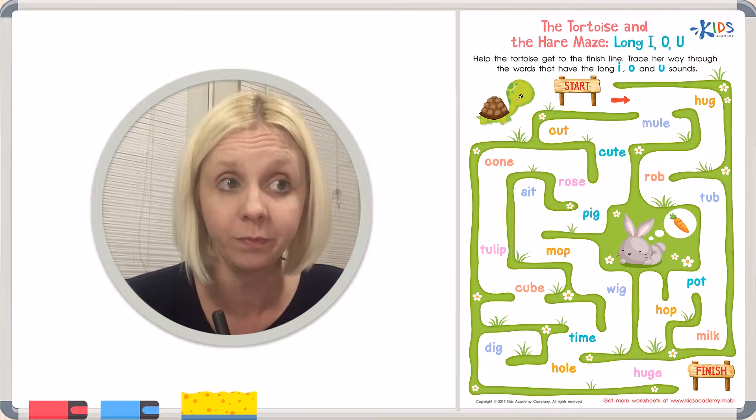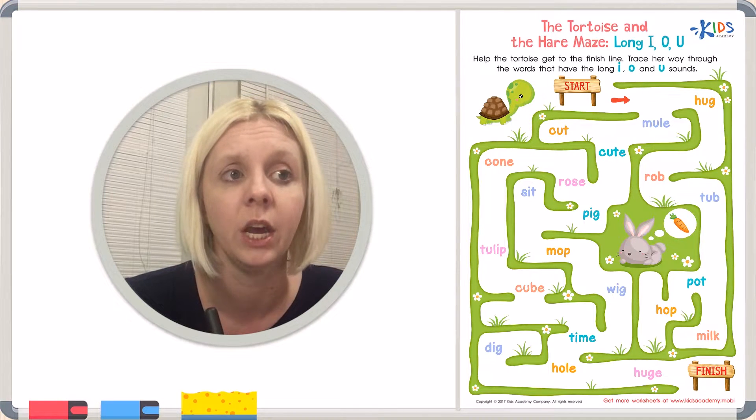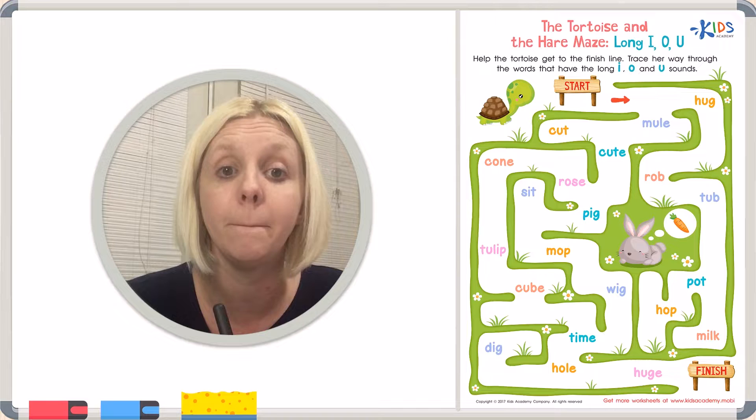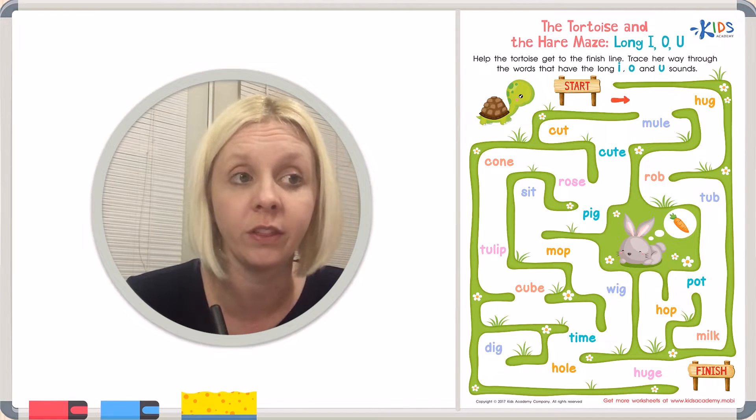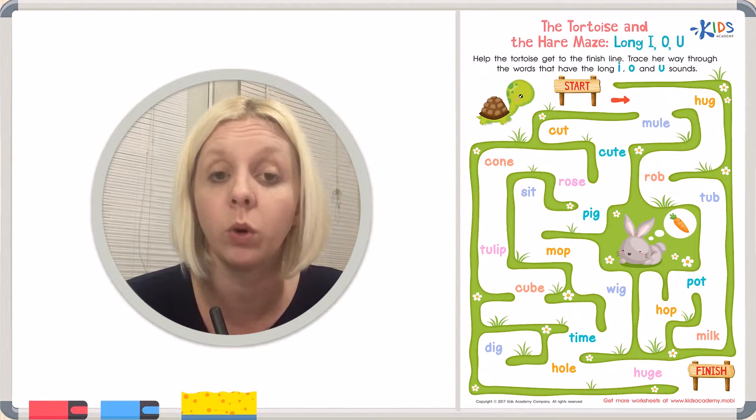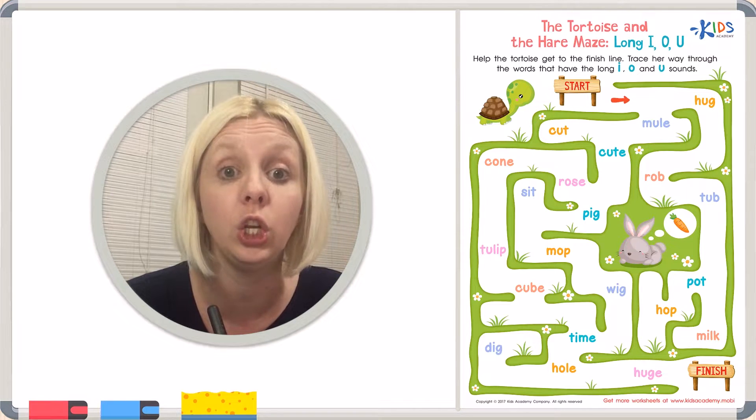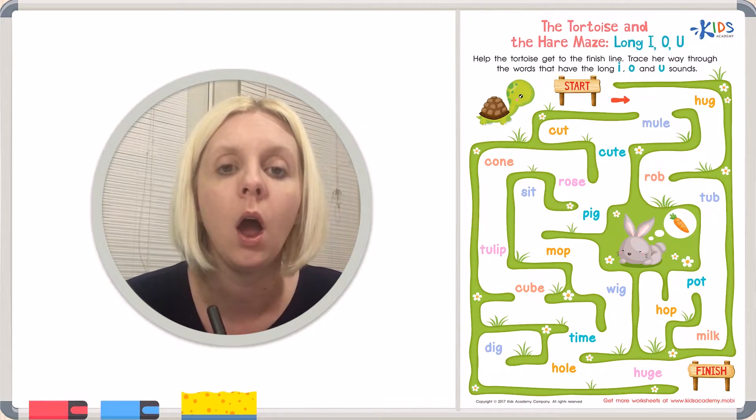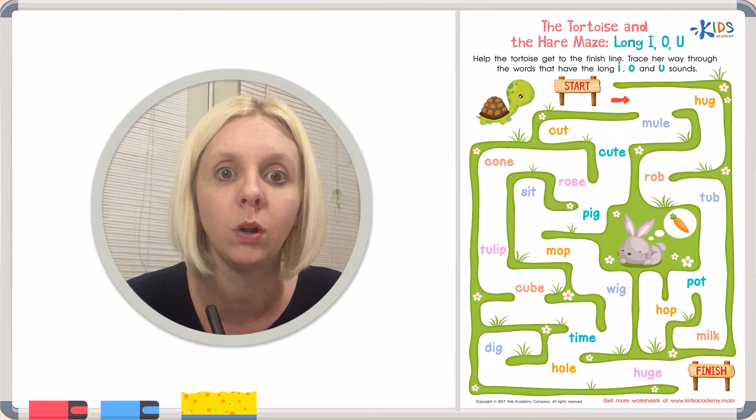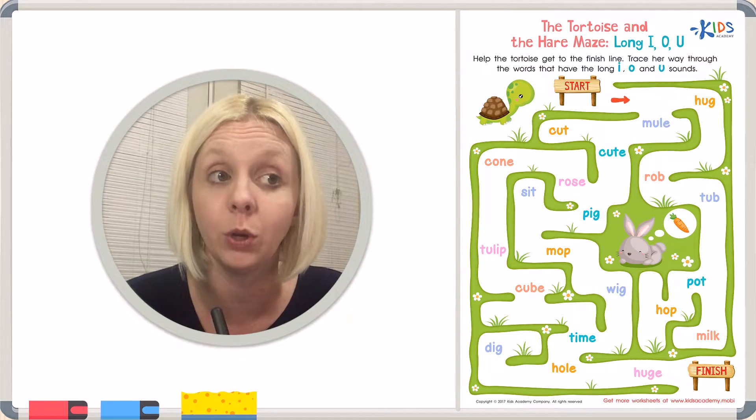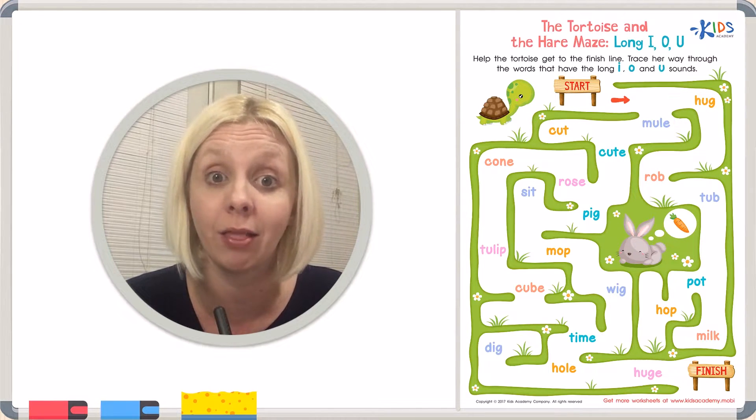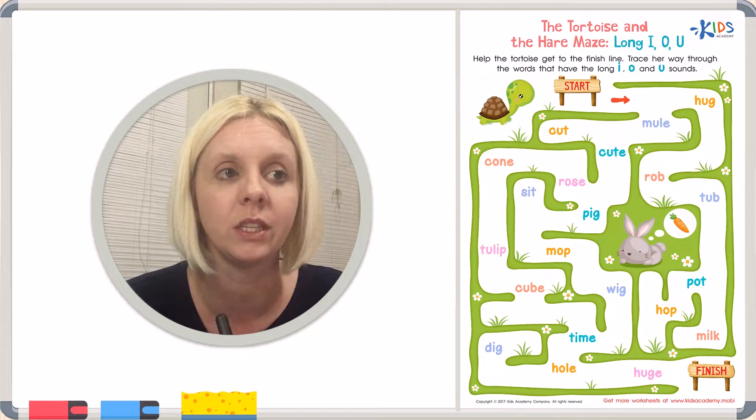We come to right here and it looks like we have two choices. We can either go to hug or mule and I want you to find the one, both of these have U in it. But I want you to find the one where it says the U name. So let's listen to it. Hug or mule. And notice too on mule it has an E at the end, right? So U says its name here that makes it a long vowel sound so this is the direction we're gonna go. We're gonna go through mule.